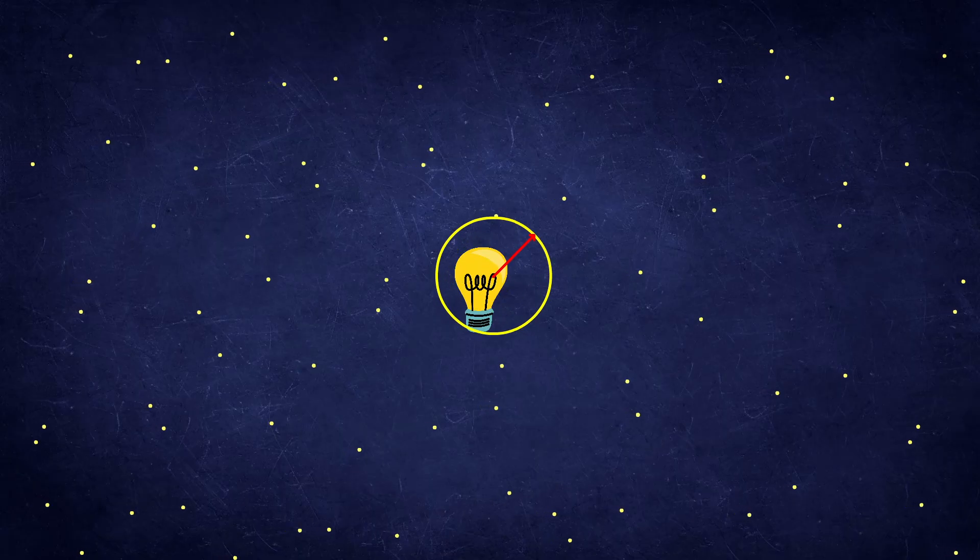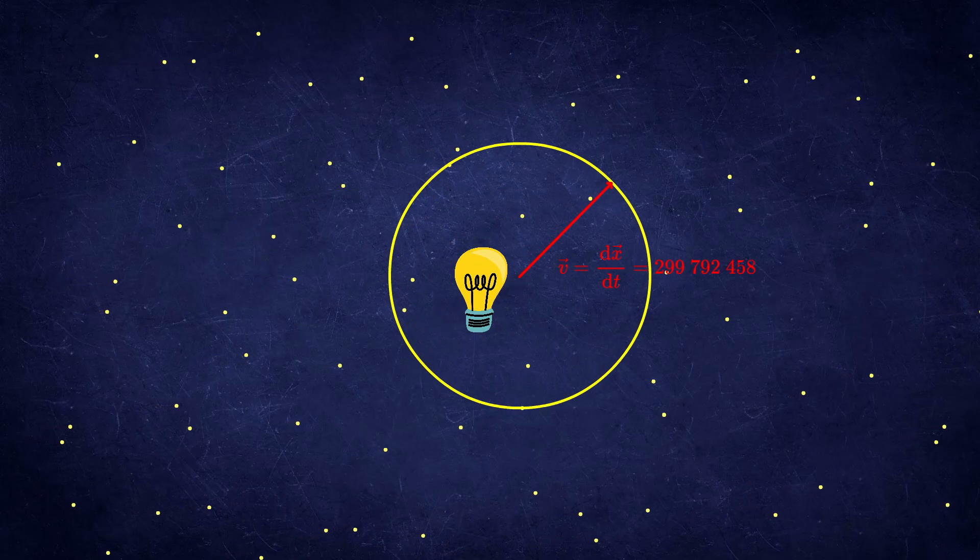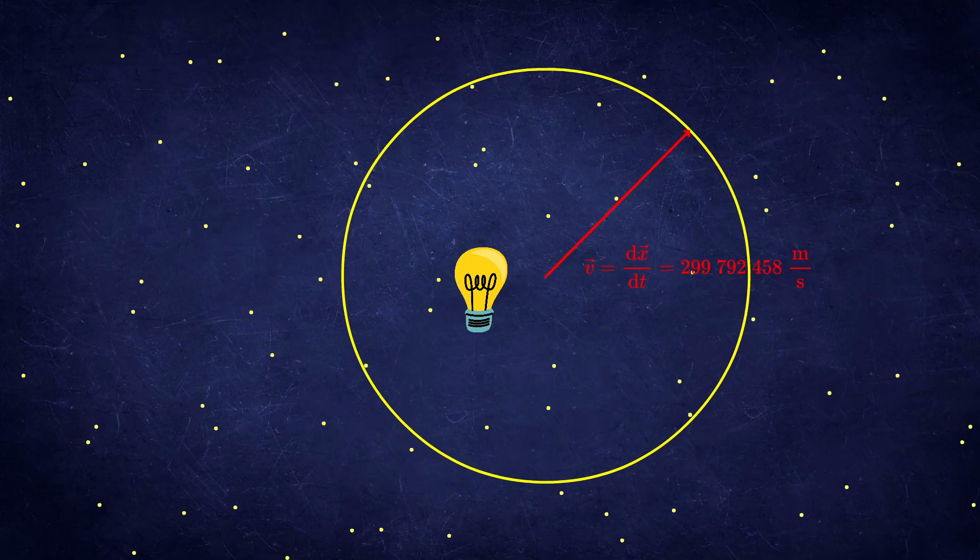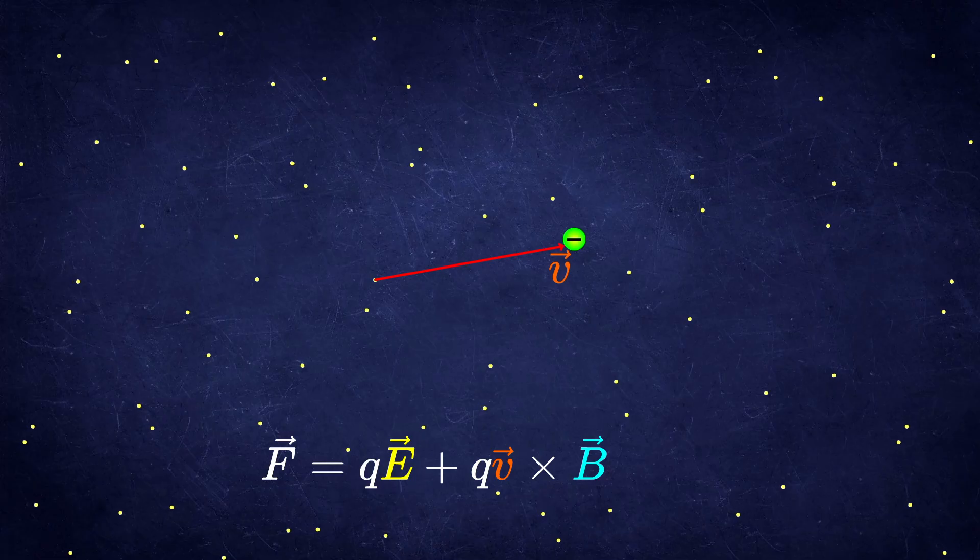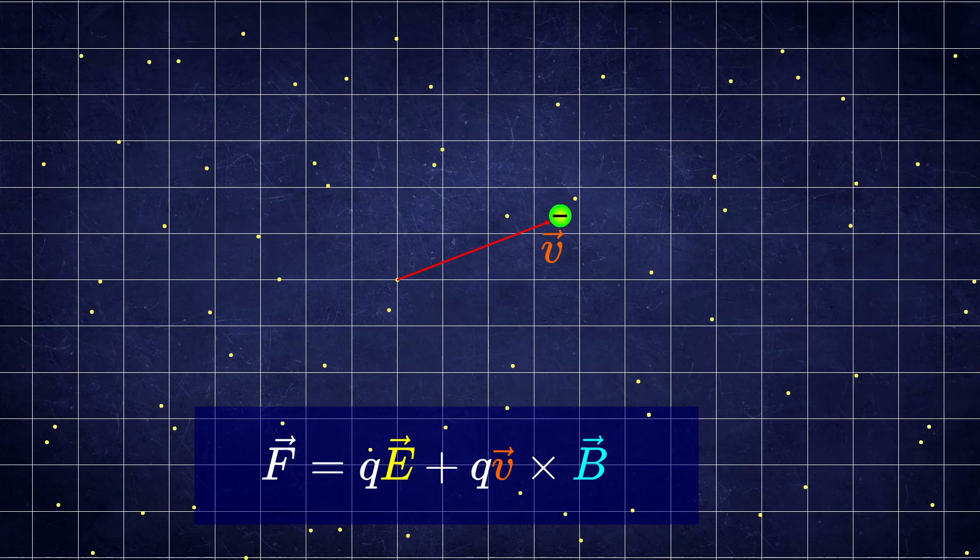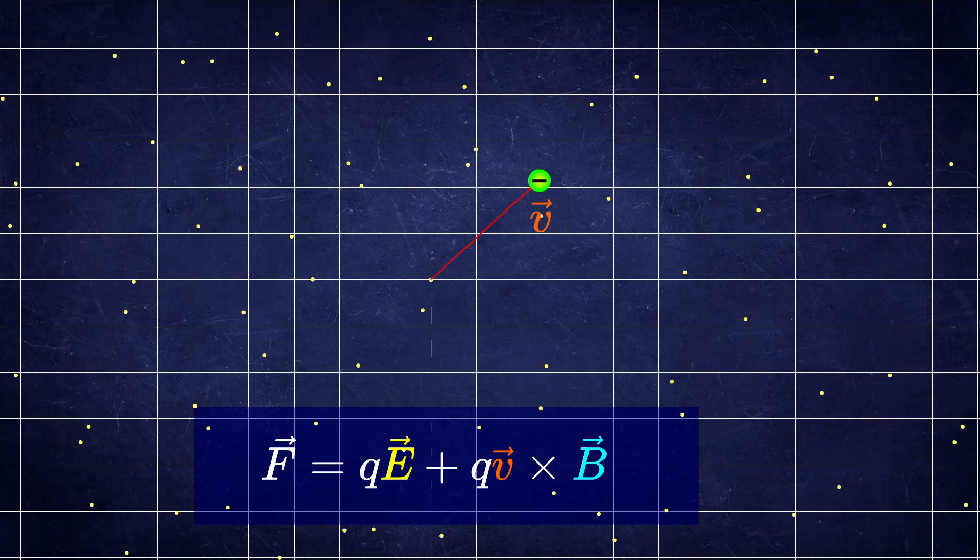At this time physicists believed that there must be a substance called ether where electrodynamical processes would take place. Therefore this c would be the speed of electromagnetic wave in this medium. And also calculating the force acting on a particle would be convenient because you would know the velocity you plug into the equation is the speed of the particle relative to this medium. Existence of such medium would of course break the Galilean principle of relativity.